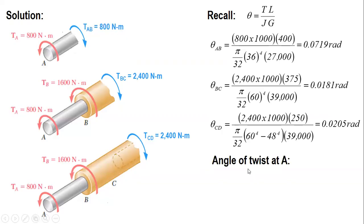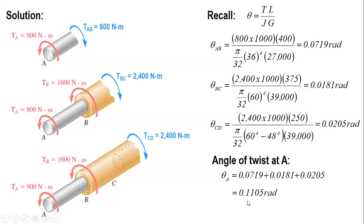Therefore, the angle of twist at point A is the sum of the angle of twist for all three segments, since the direction of the resisting torques is the same for all. Adding them gives 0.1105 radians. Converting to degrees by multiplying by 180°/π, the final answer is 6.33 degrees.